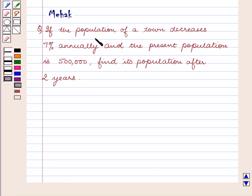If the population of a town decreases 7% annually and the present population is 500,000, find its population after 2 years. We know that the compound interest formula is amount A equal to P into 1 plus R upon 100 raised to power n.